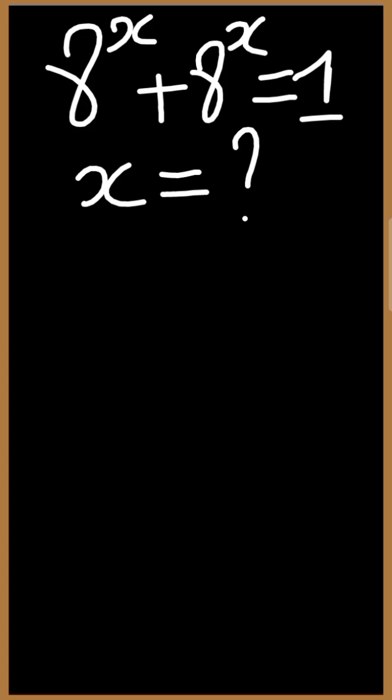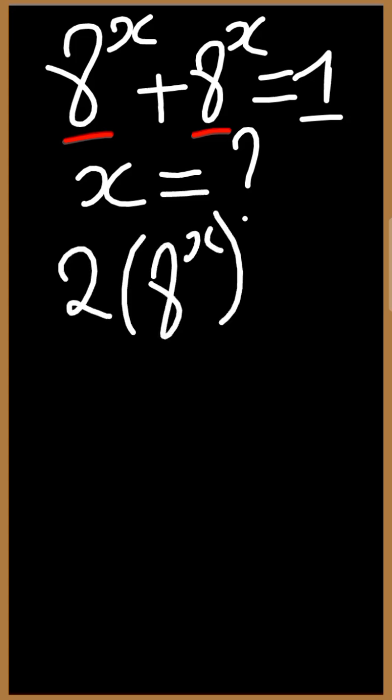8 to the power x plus 8 to the power x, they are like terms. If we let 8 to the power x be a mango, 1 mango plus 1 mango gives us 2 mangoes. It therefore means 8 to the power x plus 8 to the power x gives us 2 times 8 to the power x is equal to 1.